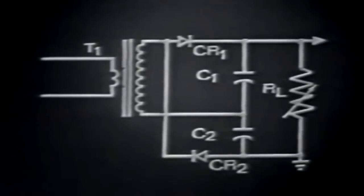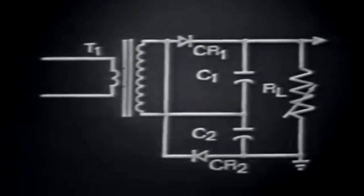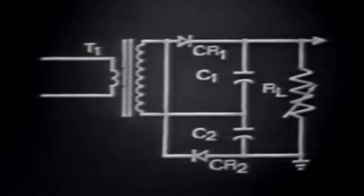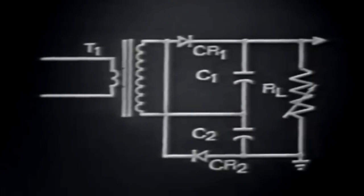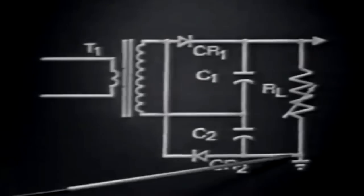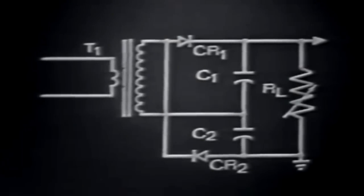A more common way of drawing the voltage doubler circuit is shown here. This arrangement shows that the voltages of C1 and C2 will add since they're placed in series with each other. This means the output equals the sum total of the voltages developed by both capacitors. This voltage doubler circuit, operating as a full wave rectifying device, develops an output pulse between here and ground on both the negative and positive alternations of the input signal.